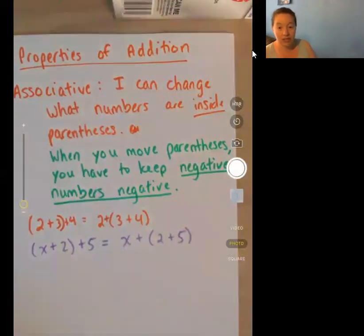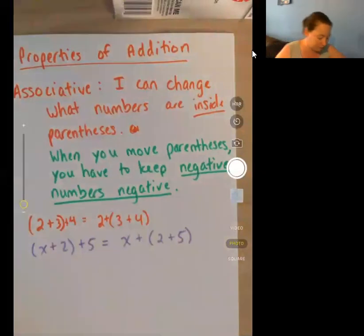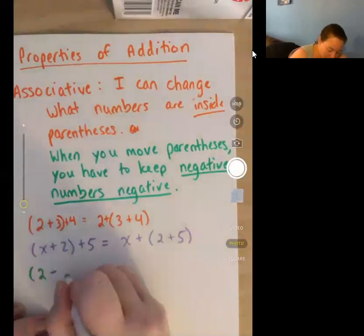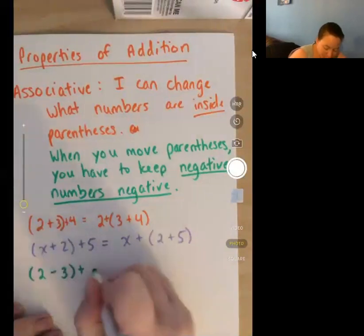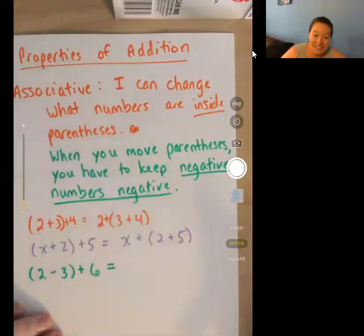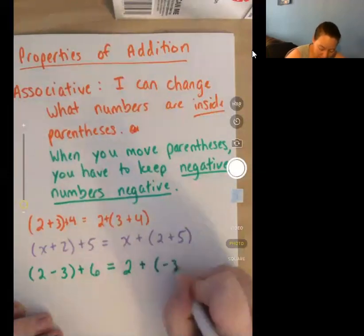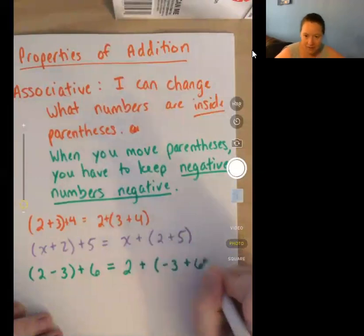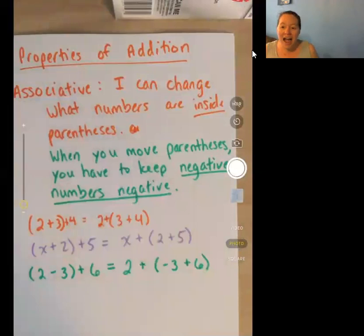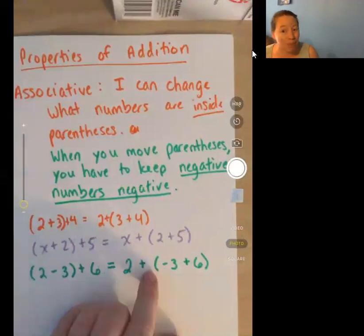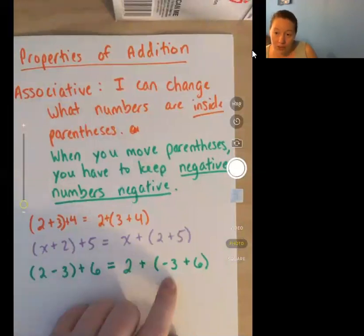Now to get to the negative numbers. If I have 2-3+6, that is equal to 2+(-3+6). I have to keep that negative with the three because if the negative ends up on the outside suddenly I'm multiplying everything by a negative. I need it to stay with the three.